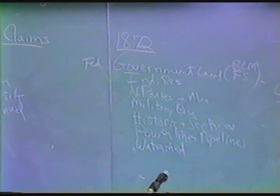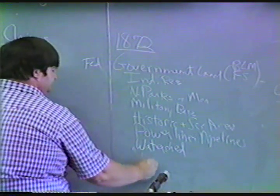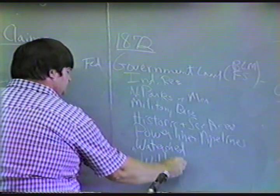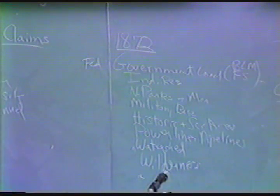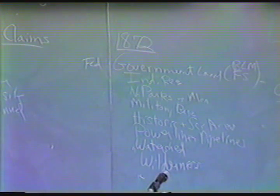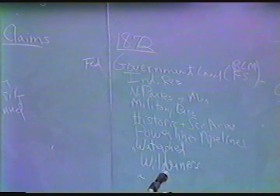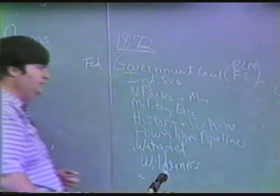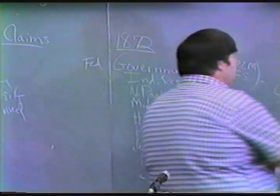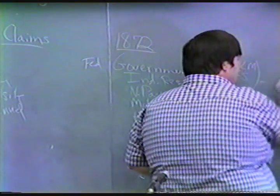We can think of many other things too — wilderness areas and various other little sidelights. So these areas would not be open to mineral entry. With these exceptions, you can take a claim. First of all, you must determine that you have found a deposit.